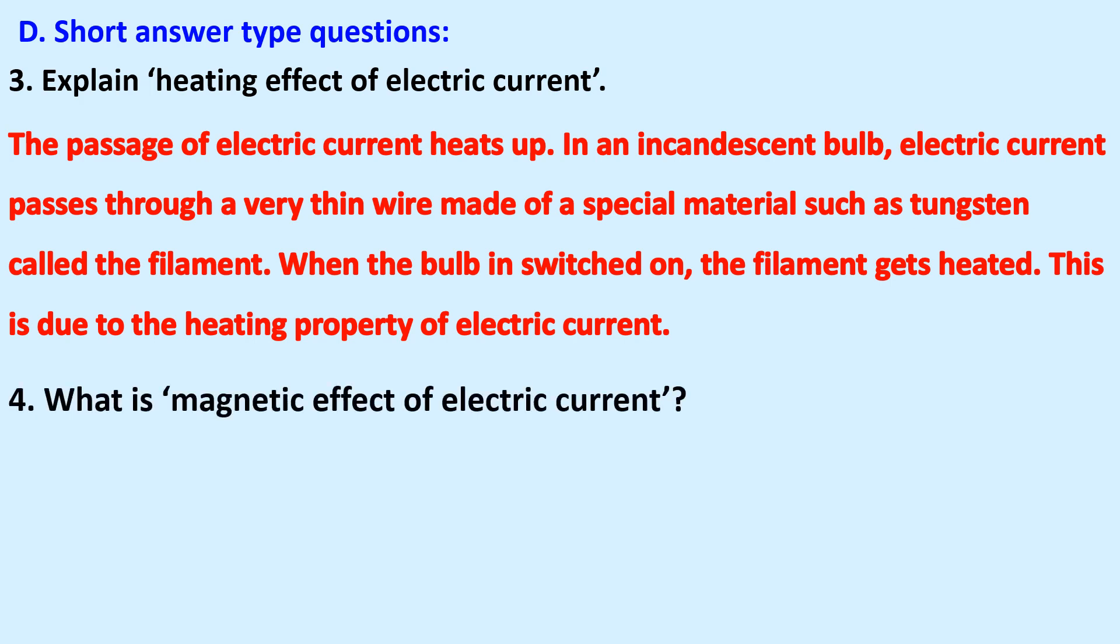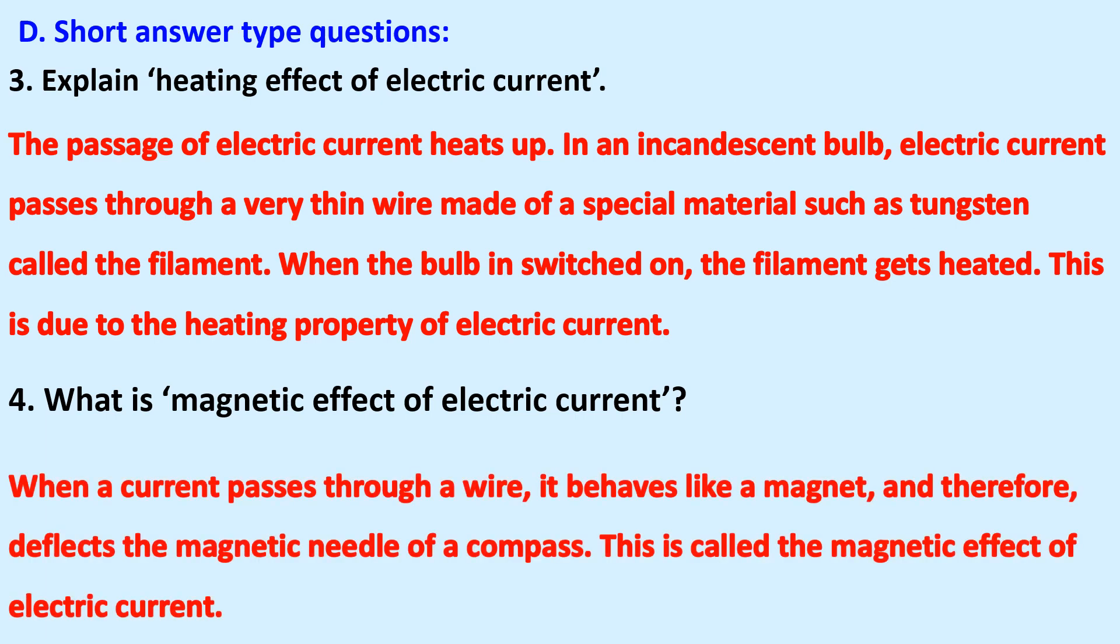What is magnetic effect of electric current? When a current passes through a wire, it behaves like a magnet and therefore deflects the magnetic needle of a compass. This is called the magnetic effect of electric current.